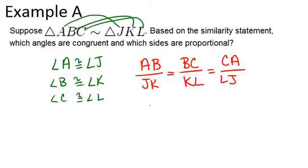So the ratio between all of these pairs of sides, which are all corresponding sides, is consistent throughout the triangles. Let's look at example B.